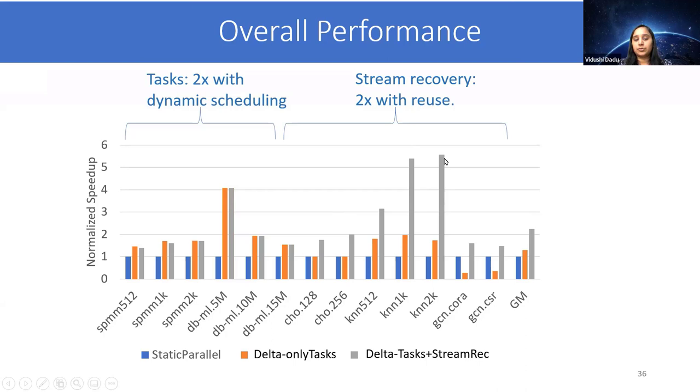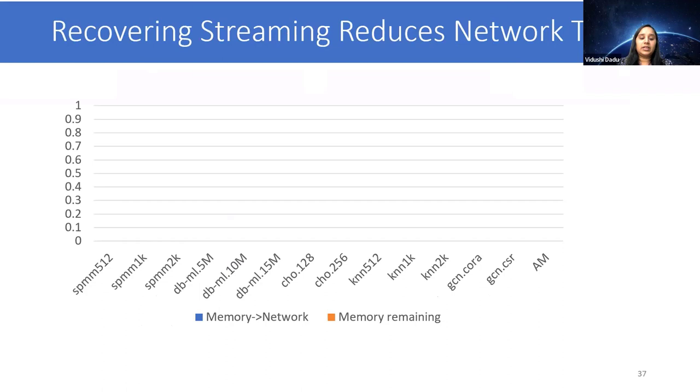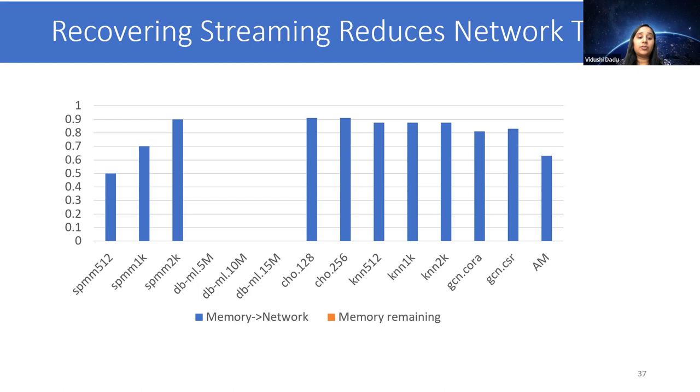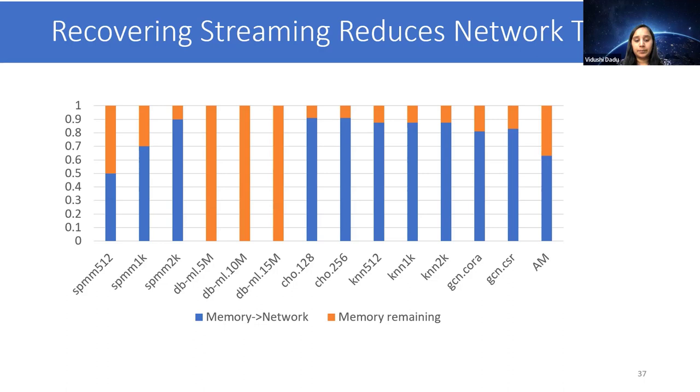To understand where the benefits are coming from, in this plot we determined how much memory traffic was converted to pure network traffic using our stream recovery edges. What we find is that more than 50% of the traffic in most of the workloads is converted to network traffic, and only a few remain. That was the source for speedup.